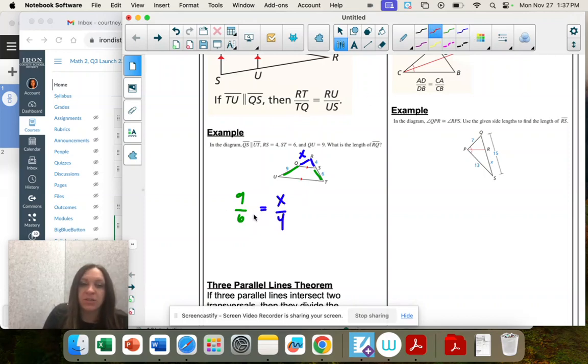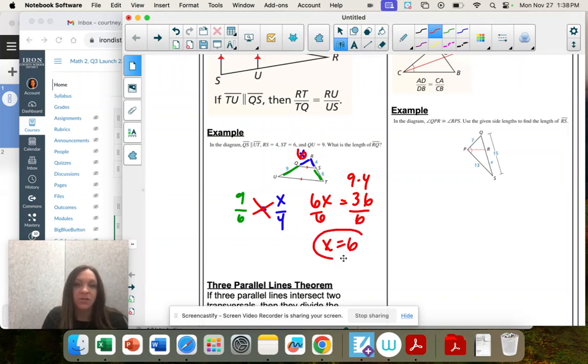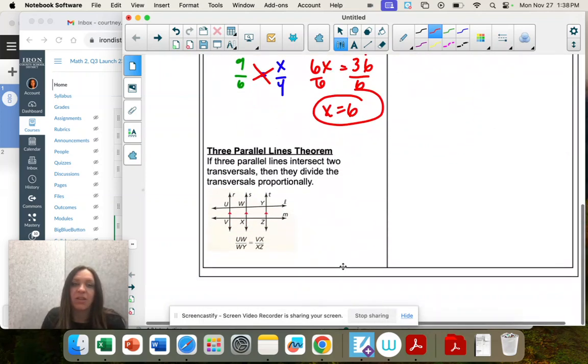You would still solve it the same. You would cross multiply 6 times x and then 9 times 4. Then I'm going to divide both sides by 6, so that value would be 6. We're doing the same thing, it's just knowing what proportions go together.